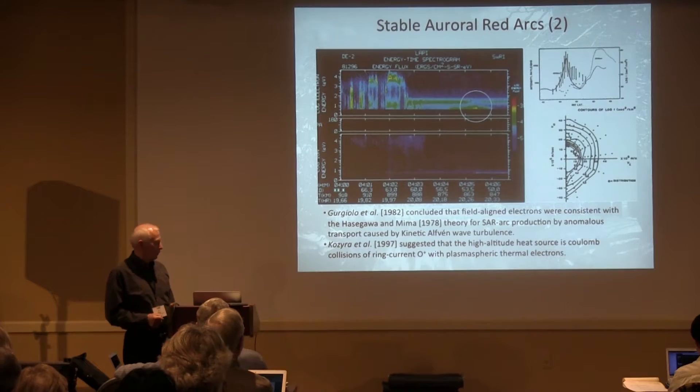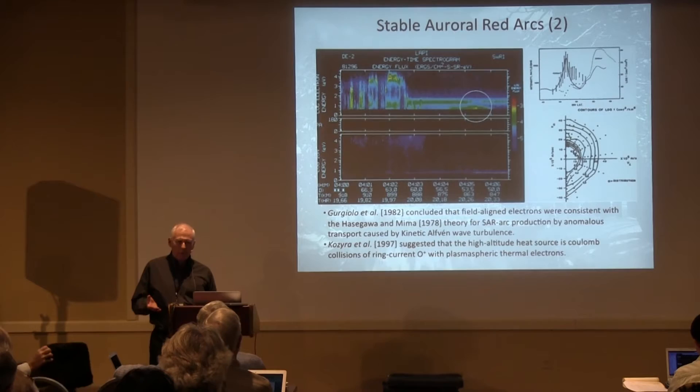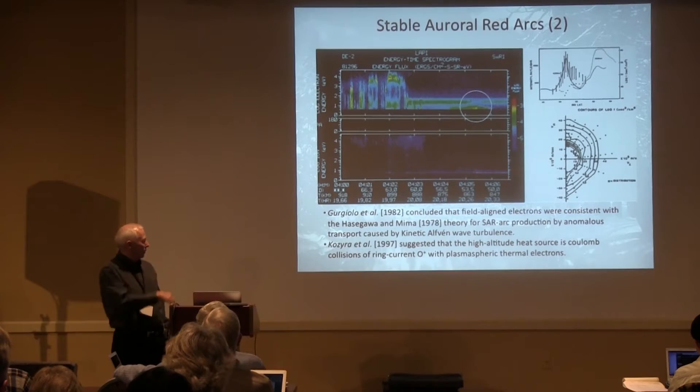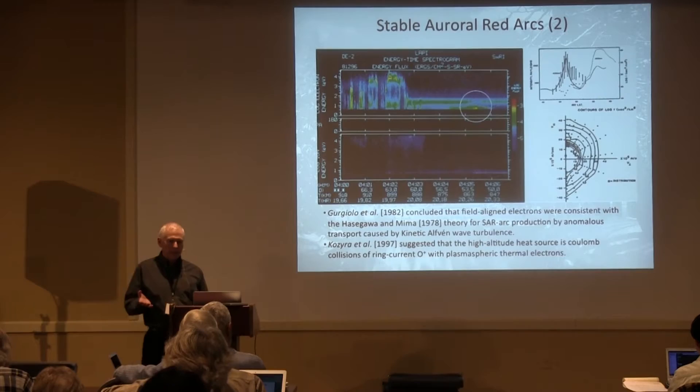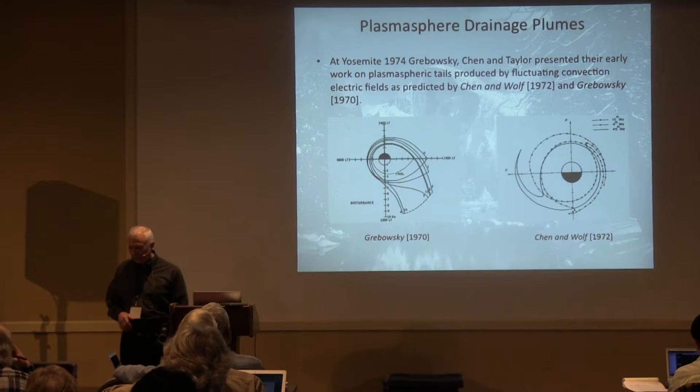Giorglio, myself, and others thought this was consistent with the Hasegawa and Mima theory — an application of Hasegawa's auroral theory from two years earlier. But then there's Cozzera's Reviews of Geophysics paper that includes O-plus collisions. And there's a recent paper by Michael Mendillo, 2012, where a SAR arc was observed over Europe. He made a list of possible mechanisms — ionospheric heating, electron heating — but didn't show the mechanism. I don't think we know the mechanism.